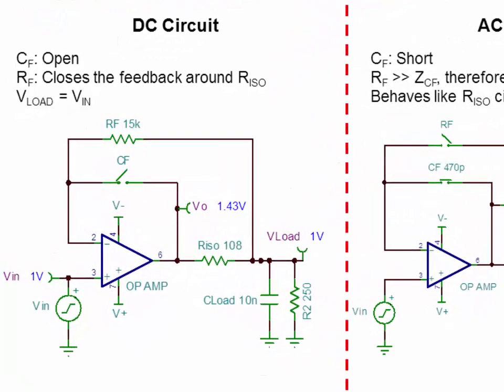At DC, the feedback capacitor CF acts as an open circuit, and RF closes the feedback loop around R-ISO. Since R-ISO is now in the op-amp feedback loop, the op-amp output will increase to overcome the R-ISO voltage drop such that the load voltage V-load is equal to V-in.